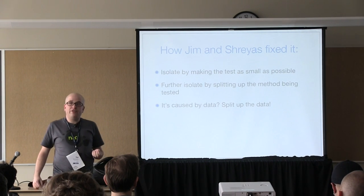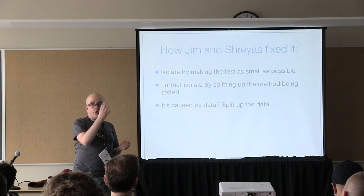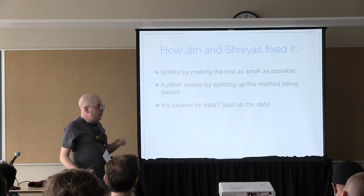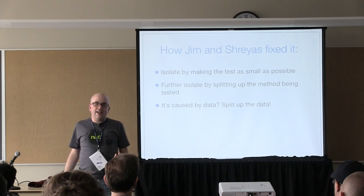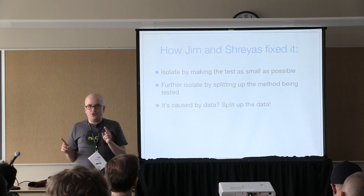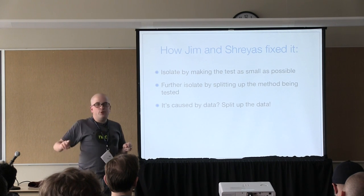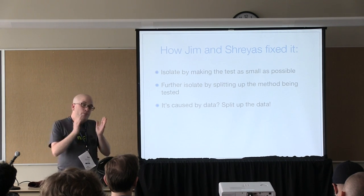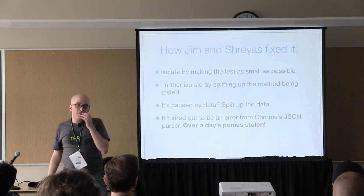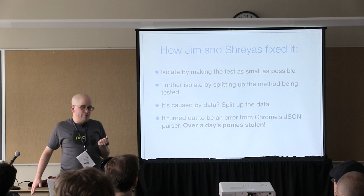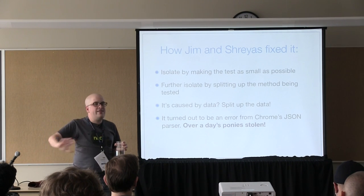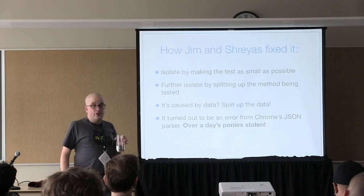If it's still not small enough, maybe it's time to start refactoring the code under test and make the method smaller. Jim Weirich and colleague Shreyas worked on it together. They knew roughly it was to do with JSON parsing and parsing some data, so they started splitting up the data as well. In the end, it was Chrome's JSON parser — which cunningly refuses to tell you anything: not that it's the JSON parser throwing the error, not where the data is — that cost us over a day's worth of pony rides.